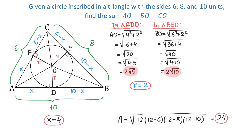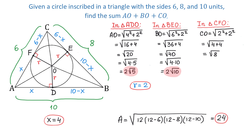Now let's look at triangle CFO. In this triangle, CF is 6 minus X, and replacing X with 4 gives 6 minus 4 equals 2. Side FO is also 2. We find the hypotenuse CO by the Pythagorean theorem: CO equals the square root of 2 squared plus 2 squared. That gives the square root of 4 plus 4, which is square root of 8. Writing 8 as 4 times 2, we get CO equals 2 root 2.